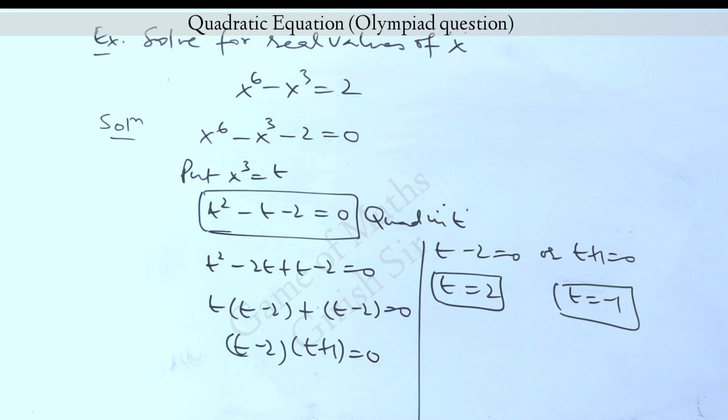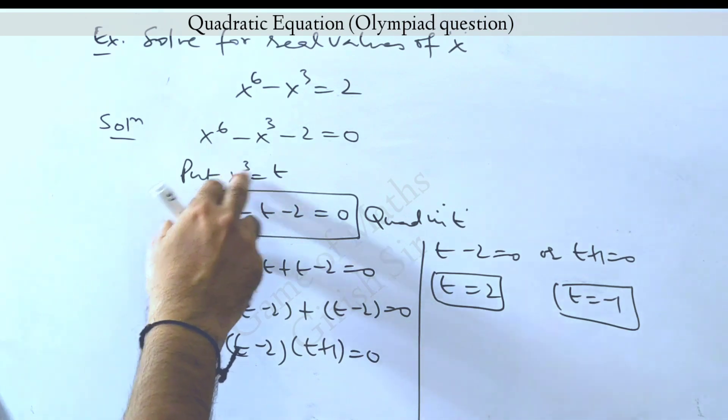So we got two values of t: t equals 2 or t equals minus 1. But we are supposed to find the value of x, and we initially assumed x cube equal to t.